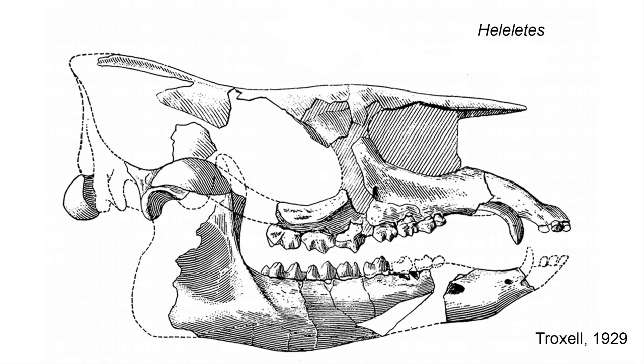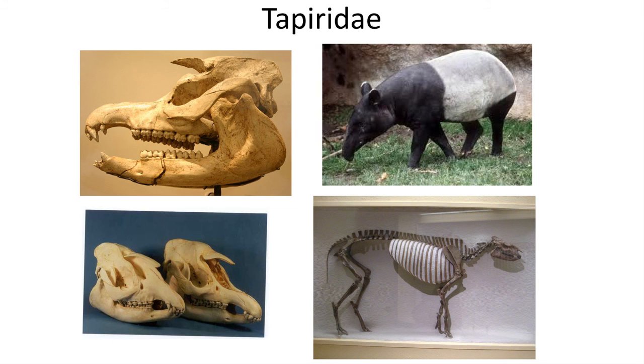Fossil tapirs are known from the early Middle Eocene and have a retracted nasal opening, indicating that very early in their evolution tapirs had trunks, likely similar to modern tapirs. Tapirs disappeared in North America around 10,000 years ago with the appearance of humans, but have survived in the jungles of South America until the present. You should now be able to describe the major groups of both living and extinct Perissodactyla. For more information, visit geology.usu.edu or benjaminburger.org.